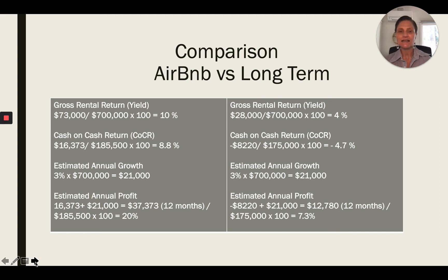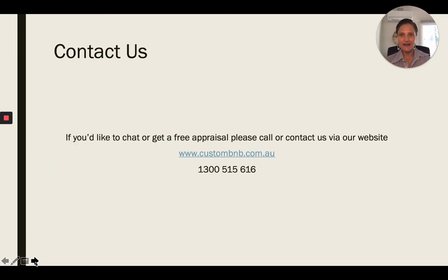Lining them up side by side: Airbnb versus long-term rental — yield 10% versus 4%, cash on cash return 8.8% versus minus 4.7%, growth is the same, but annual profit is 20% versus 7.3%. It's certainly something to consider, and something I'm passionate about for property investors. If you'd like a free appraisal of your property, don't hesitate to call us or contact us via our website. We'd love to chat about how your property might perform as a short-term rental.